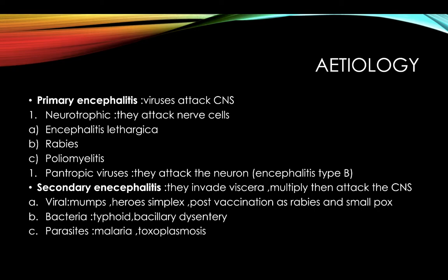Etiology: there are two types — primary ankyphalitis and secondary ankyphalitis. Primary ankyphalitis is caused by viruses that attack the brain directly. Secondary ankyphalitis is caused by other organisms that attack the brain indirectly.